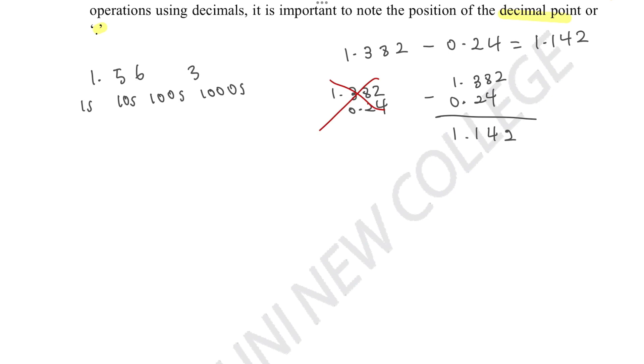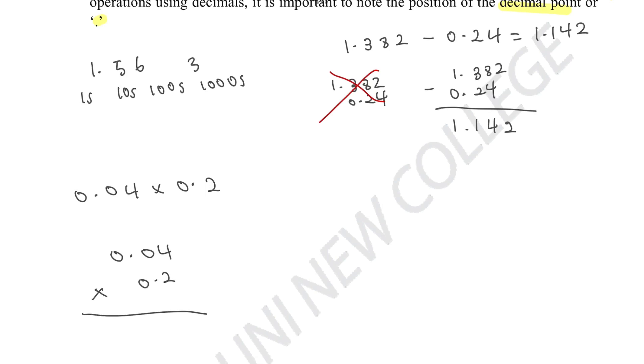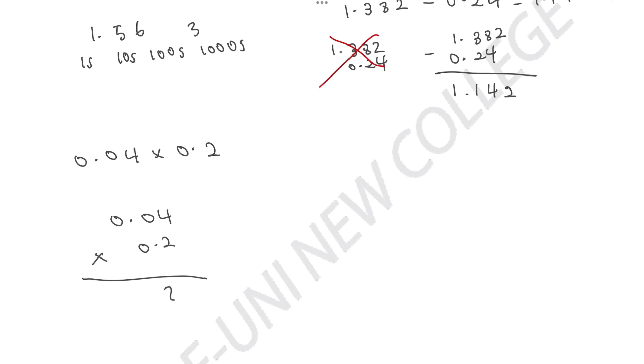So let's say you are timesing 0.04 with 0.2. You don't actually have to align multiplication because what happens is firstly we do the math, which is 4 times 2, which is 8.